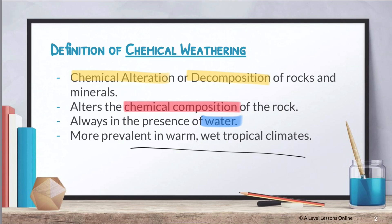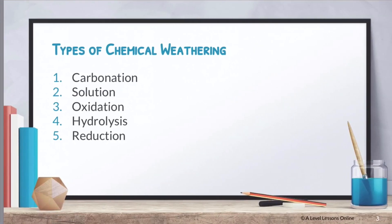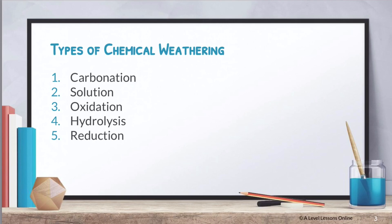There are five main types of Chemical Weathering in your syllabus that we will cover. You have carbonation, solution, hydrolysis, oxidation, and lastly reduction. We'll go through the conditions, processes, and outcomes for each one of these.